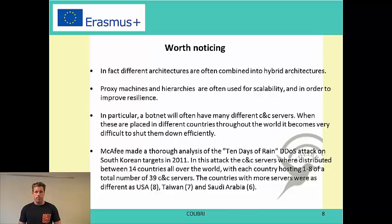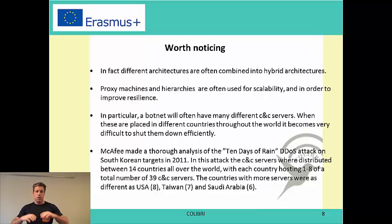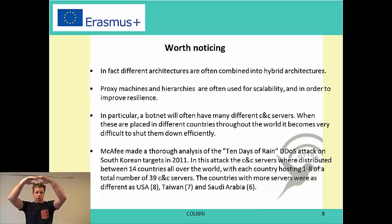For example, you can take the centralized architecture and combine it with some proxy bots, which makes it harder to find even a centralized command and control server. You can have a centralized system with a couple of servers using round robin, where five servers share the load so that even if one is closed down the rest can still survive. Hierarchies are often used for scalability: bots at the bottom, a higher layer with proxies, and the bot master on top of it all to improve resilience.